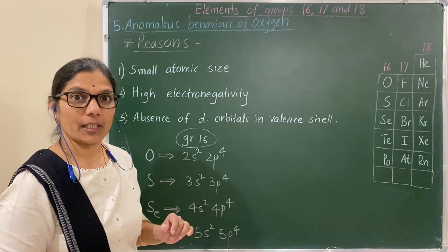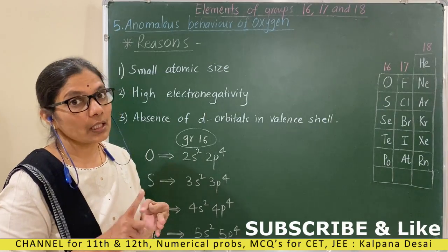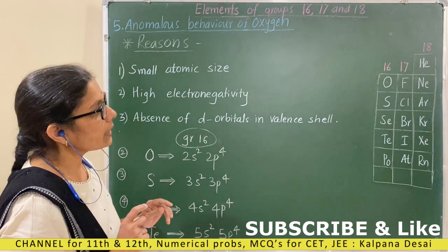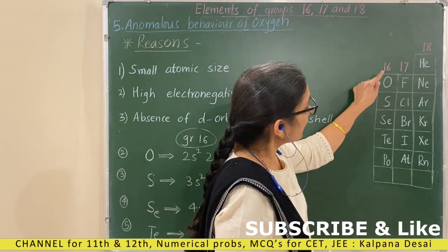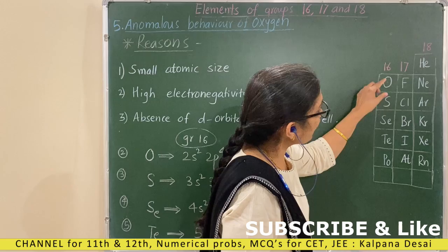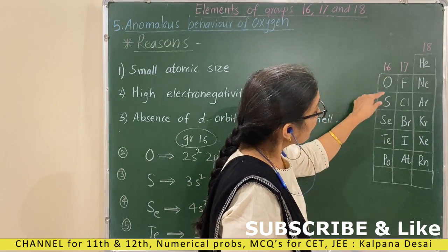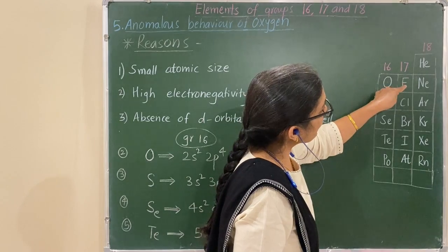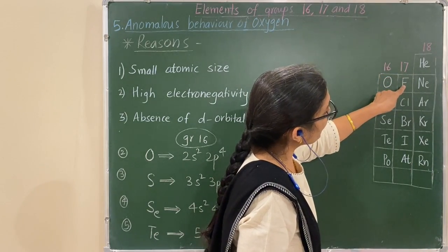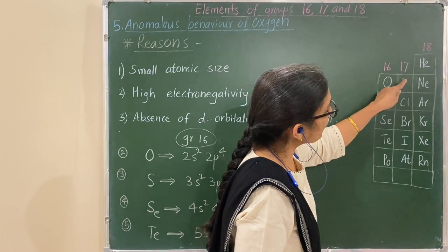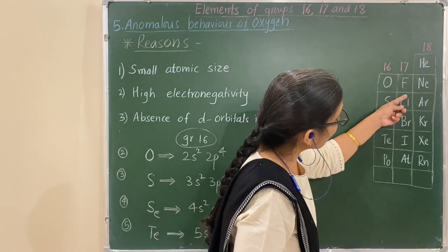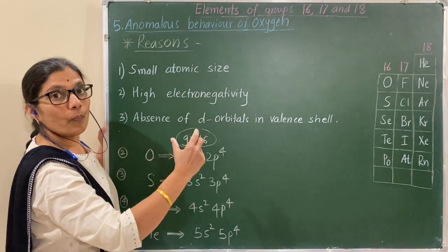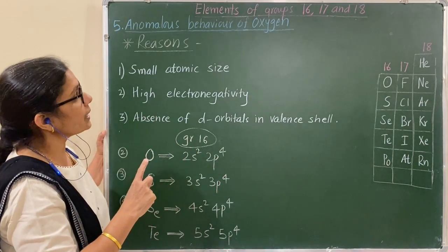In previous sessions we studied introduction, occurrence, electronic configuration, and atomic and physical properties. Now let us see the next part. In group 16, the first member is oxygen — it behaves differently and has different properties than the rest of the members. Similarly in group 17, the halogen family, the first member fluorine has anomalous properties and behaves differently than the rest of the members. Let us now see the anomalous behavior of oxygen and fluorine.